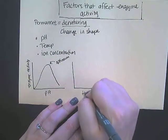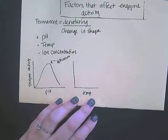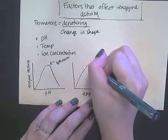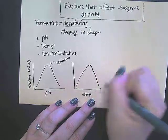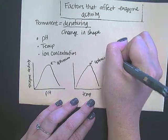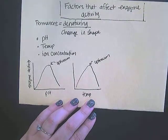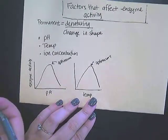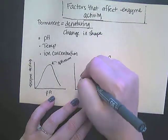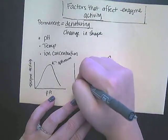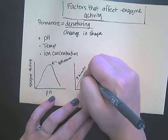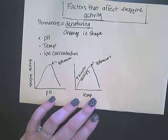We also talk about temperature and how temperature affects enzyme activity. Usually what happens with these graphs, again, you have your optimum, which is where the enzyme is most active, and that temperature is going to depend on the type of organism. With temperature, it's important to know that on the left side you have an increase in kinetic energy, which is the energy of motion in the molecule.